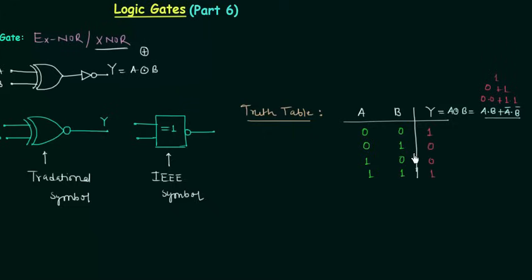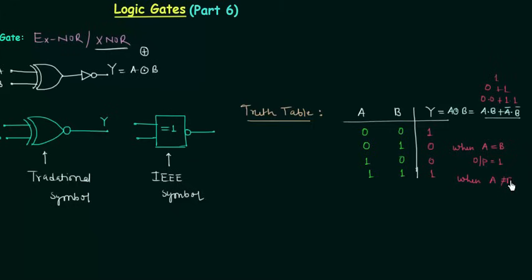From the truth table, when A equals B the output is 1, and when A is not equal to B the output is 0. For the cases where A and B are different, the output is 0.